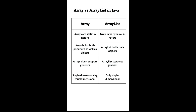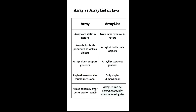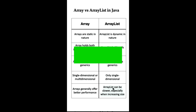Arrays can be single or multi-dimensional, whereas ArrayList is single dimensional. However, you can have an ArrayList of ArrayLists to simulate multiple dimensions. Arrays generally offer better performance because they are a simple data structure with direct access to their elements, whereas ArrayList may be slower, especially when the size is increased.